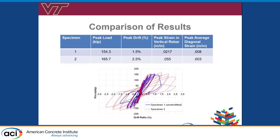Comparing the unretrofitted and retrofitted specimens: we didn't gain very much strength — only 165 kips versus 154 kips — but we did get a lot more ductility. The failure mode is much more flexurally dominated than shear and brittle dominated. This is validated further by the strain in the vertical rebar: in specimen 2, the vertical rebar reached much more of its flexural capacity compared to specimen 1. The diagonal peak strain across the face of the web was much higher in the first specimen, consistent with its diagonal tension failure mode, versus just 0.03 in the second specimen.